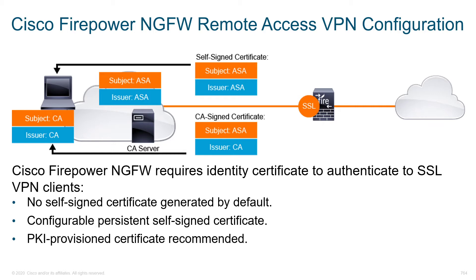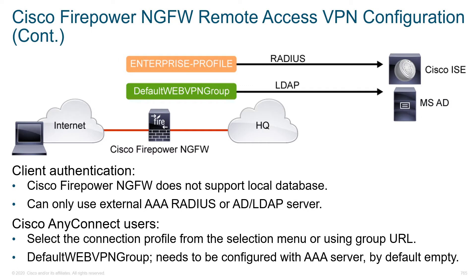Firepower Next Generation Firewall has some of the same configuration components and a few subtle differences. For VPN clients, there's no self-signed certificate generated by default, which was the case on the ASA, but we do have the ability to configure a persistent self-signed certificate. That's okay for lab use, but a PKI provisioned certificate is what's recommended. We don't want users getting used to clicking through certificate errors — it's going to cause more problems in the long run.